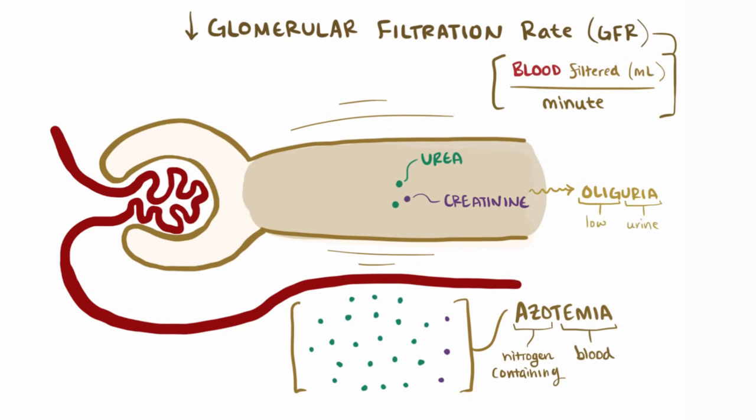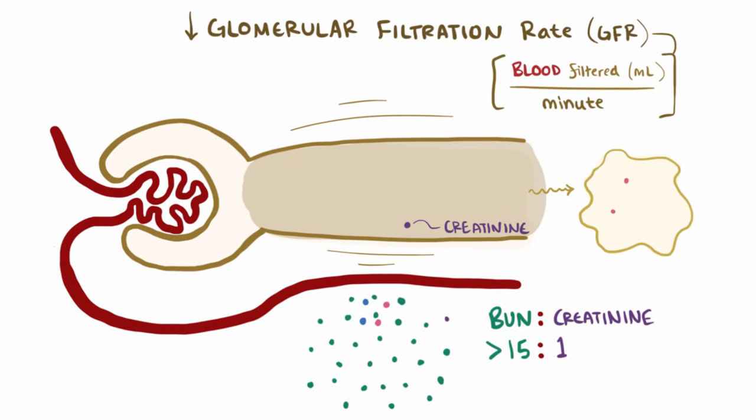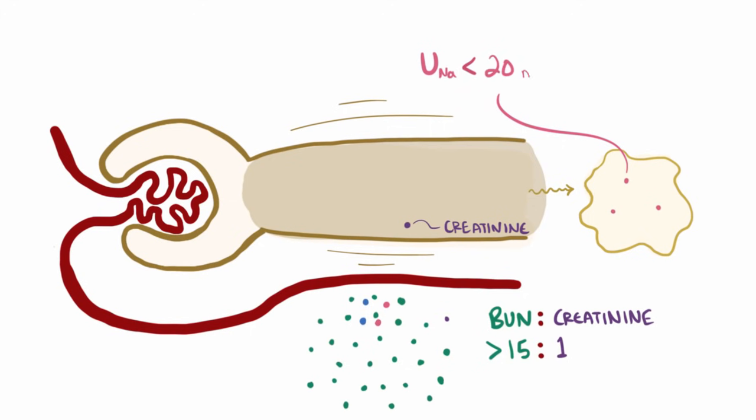Now if we follow the stuff that does make it into the tubule, which also includes things like sodium and water, it turns out that the high-pressure tubular system essentially forces more reabsorption of sodium, water, and urea, but not much creatinine because remember little to no creatinine gets reabsorbed. Now this increased urea reabsorption relative to creatinine increases the BUN to creatinine ratio in the blood, typically making it greater than about 15 to 1. Also, while the tubules aren't functioning normally and reabsorbing appropriately, the urine sodium is typically less than 20 mEq per liter, since most of that sodium is being reabsorbed, which means that the fraction of sodium excreted to sodium filtered, or FENA, is usually less than 1%.